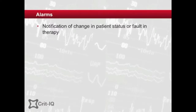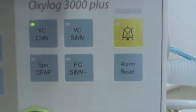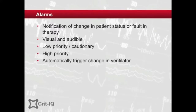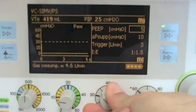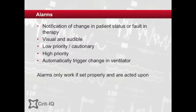As a warning tool, alarms need to alert the caregiver that something has changed. Alarms may be visual or audible, or both. Some are considered cautionary only, while others result in action by the ventilator regardless of whether or not they are noted, such as the high pressure alarm. Furthermore, many alarms can be tailored to the patient's needs and as such only function if set and monitored appropriately.